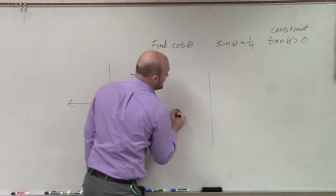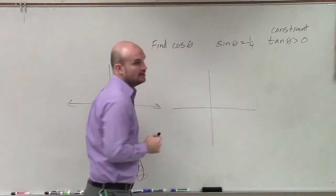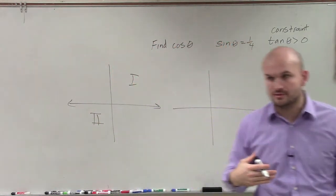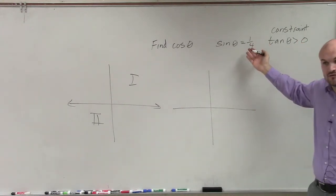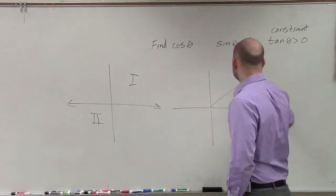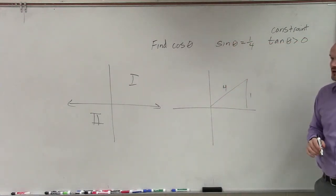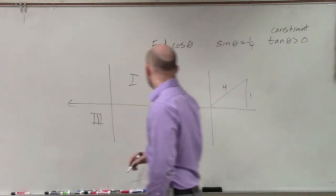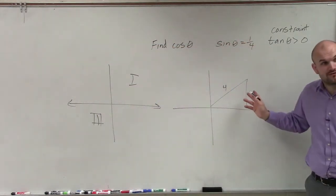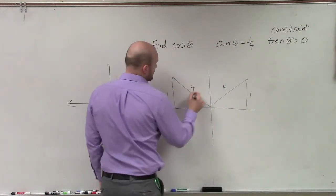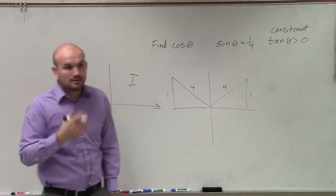Now if I'm going to graph sine equals 1/4, remember sine of 1/4 is your opposite over your hypotenuse. This is a positive 1/4, so I could do something like this: 1 over 4. But that's not the only triangle I could do. Shouldn't that be 3? Yeah, it's 3. You're right, thank you. This could be 1 over 4, but also you could do 1 over here.